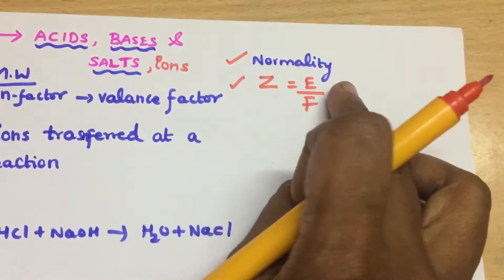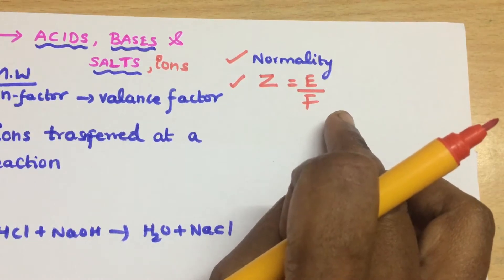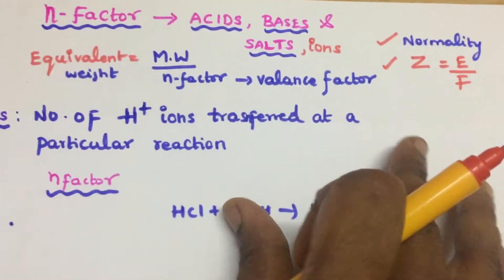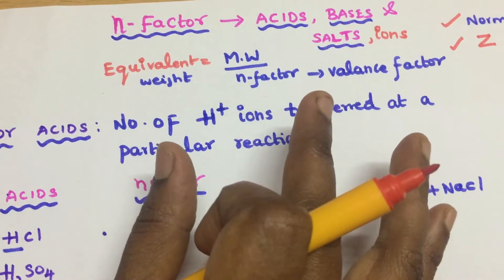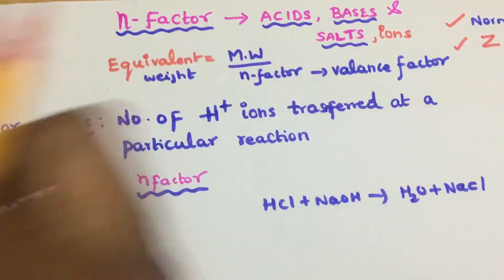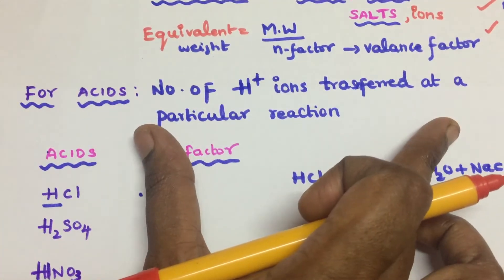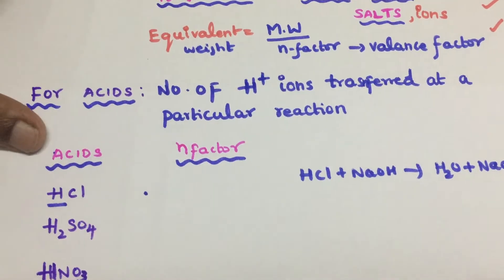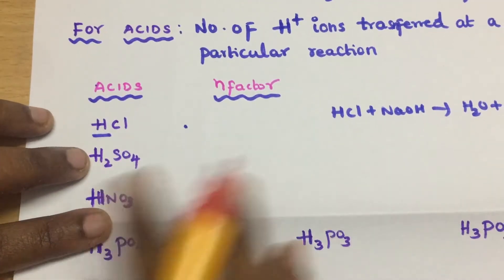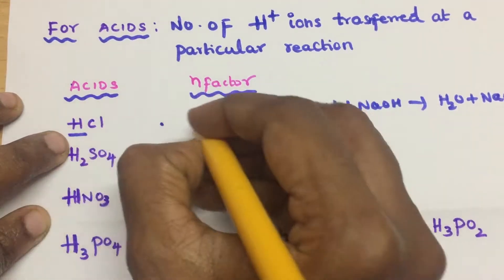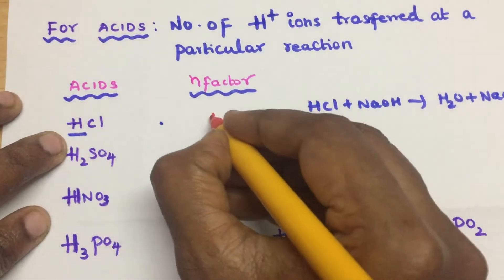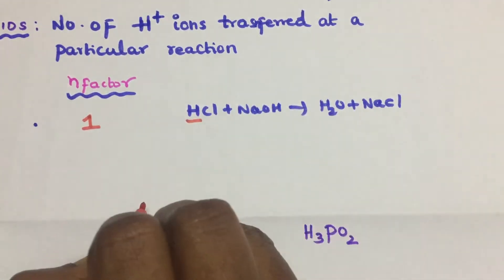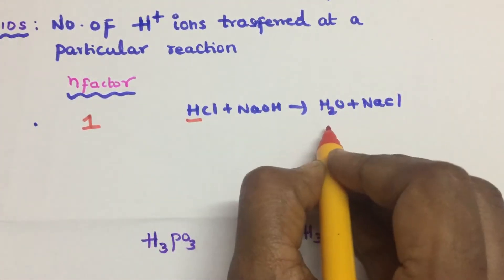The valence factor, what do you learn? To calculate the equivalent weight. Without knowing how to calculate equivalent weight, you cannot solve normality problems or deal with Faraday's law problems. So this is very simple. For acids, N-factor is the number of H+ ions transferred in a particular reaction.